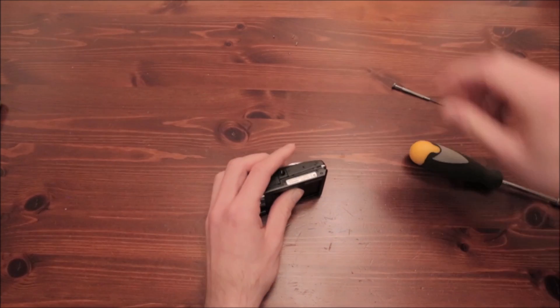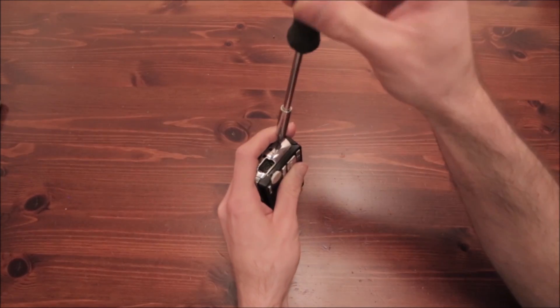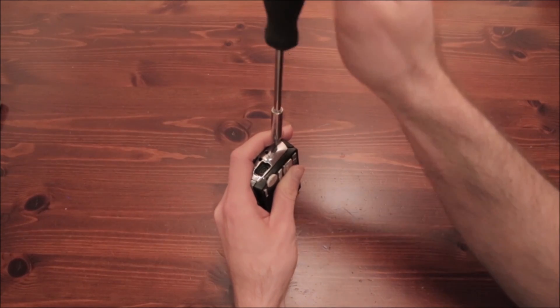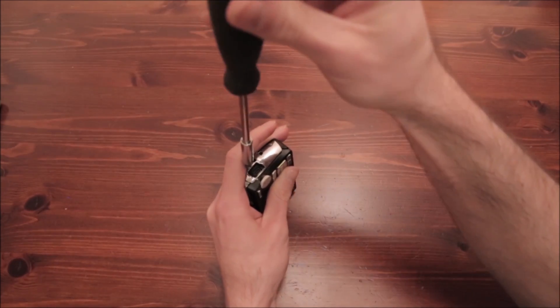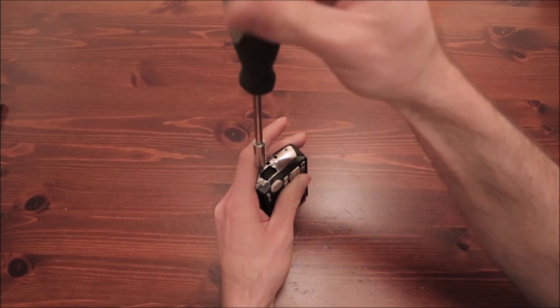Once we're done with the lower part, then we go to the side and remove the side screws. That will give us access to the side panel, and once we remove the side panel, then we can remove the outer case of the camera.